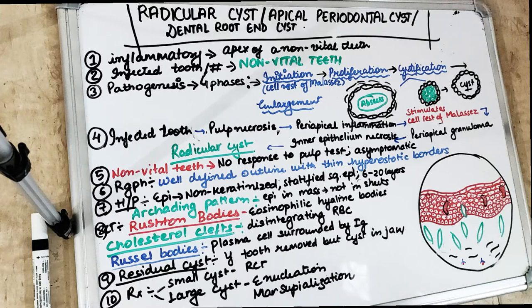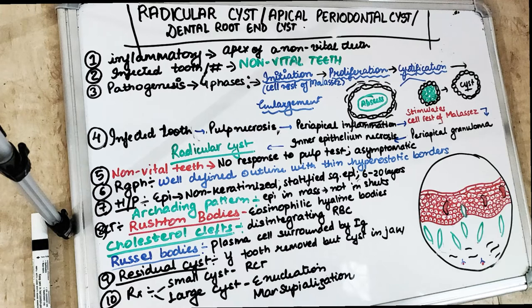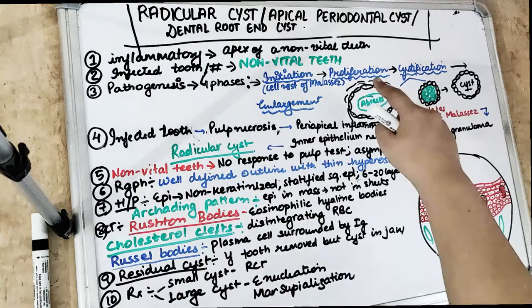The pathogenesis of the radicular cyst is divided into four phases: initiation, proliferation, cystification, and cyst enlargement.